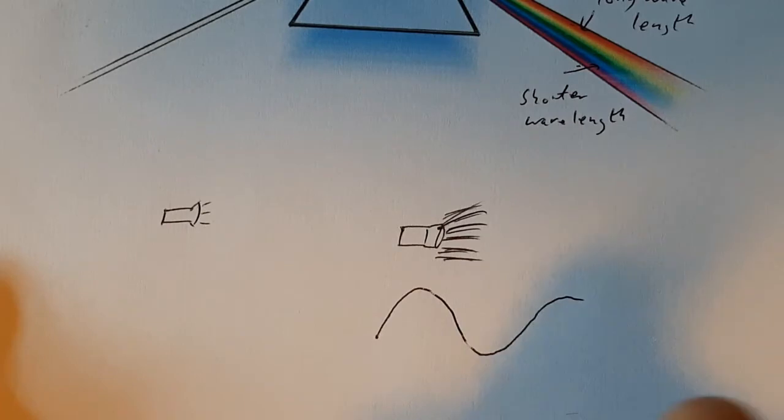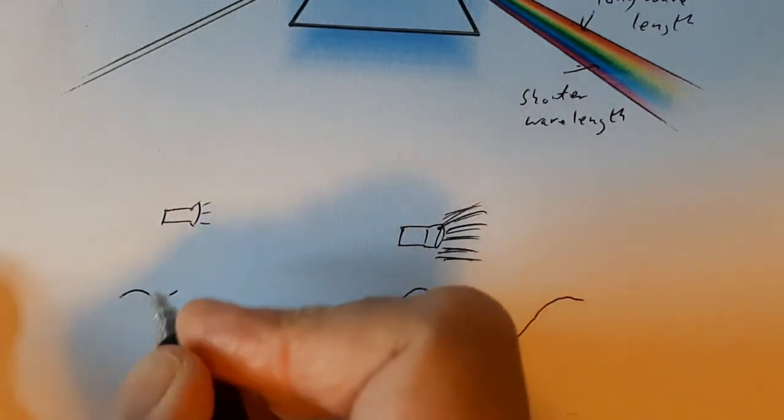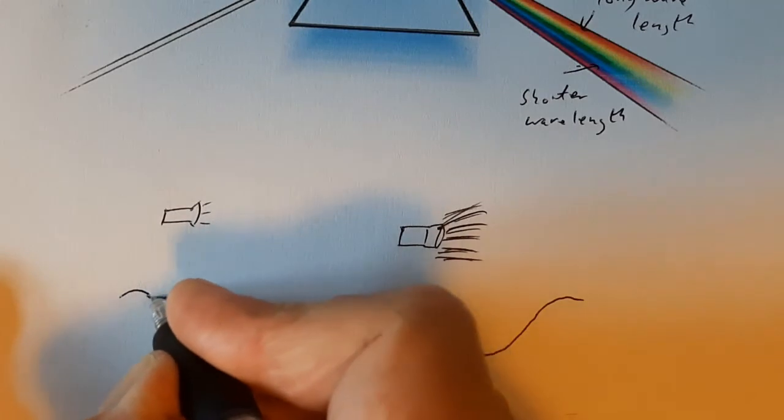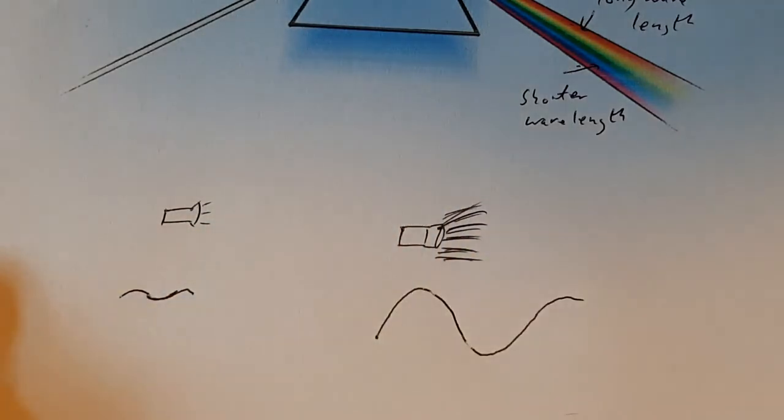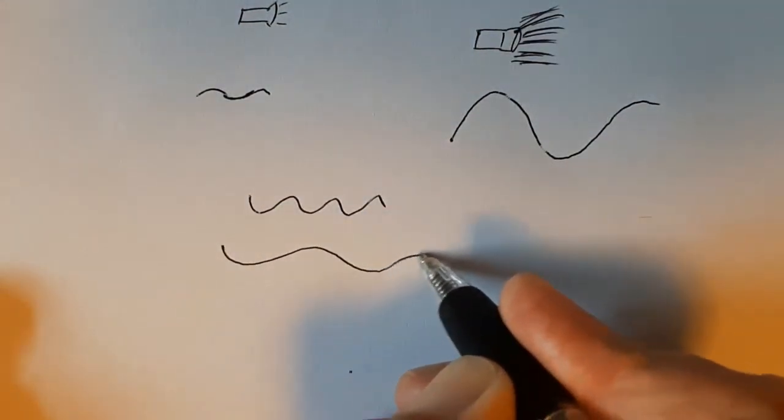So, if that wave represents bright light, this wave represents less bright light. If this wave represents light, this wave represents red light because it's got a longer wavelength.